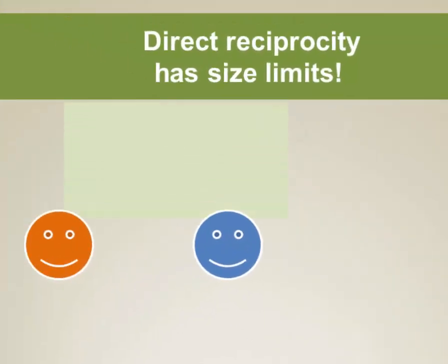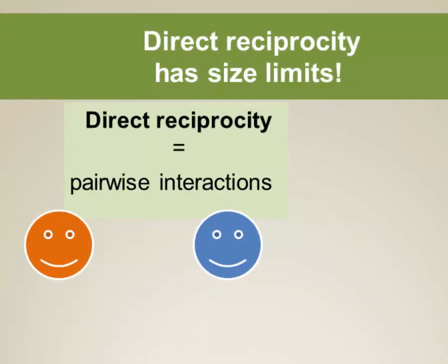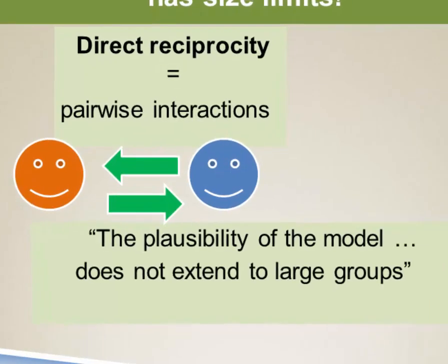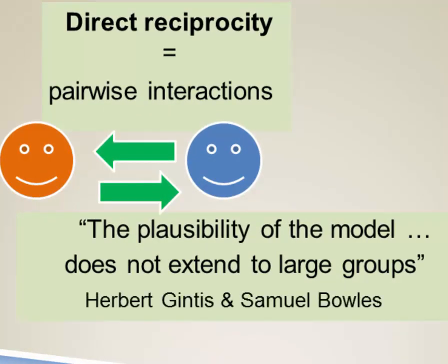This tells us that direct reciprocity also has size limits. Hamilton's rule is limited to interactions among, in humans, a relatively small number of close relatives. Direct reciprocity centers on pairwise interactions between two agents, and because the probability of their meeting again has to be high for this to work, the plausibility of the model doesn't extend to large groups where the likelihood of any two individuals interacting again is low.